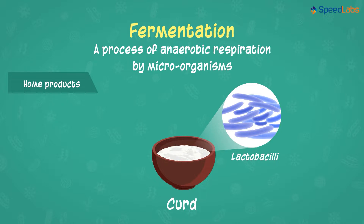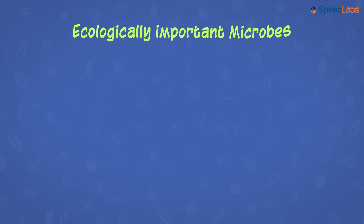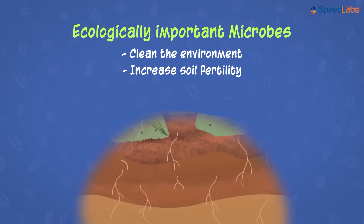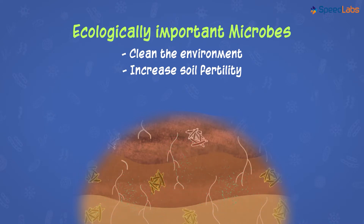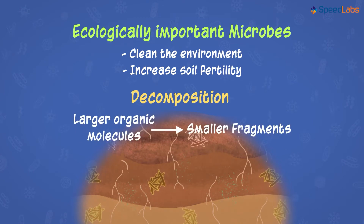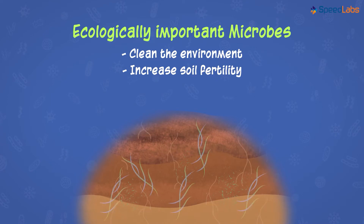Are there any more advantages of microbes around us? There are many. Most importantly, they help in cleaning the environment and add to the fertility of the soil. When organic wastes are dumped into the soil, microbes convert these wastes into extremely useful products through the process of decomposition. This breaks larger organic molecules into smaller fragments, adding nutrients to the soil and increasing its fertility. Additionally, certain blue-green algae are able to fix atmospheric nitrogen into the soil, which also helps increase the soil's quality and fertility.